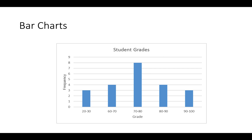Another bar chart issue: this chart of student grades does start at zero, but it skips some categories — jumping from 20–30 right up to 60–70. It looks like grades are evenly distributed around 70 points, but it hides the fact that students who got 20–30 are doing really poorly. If the 30–40, 40–50, and 50–60 bars were included — even though they're empty — you'd see that gap and understand those students are struggling.